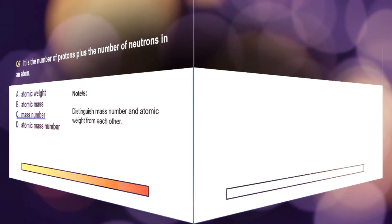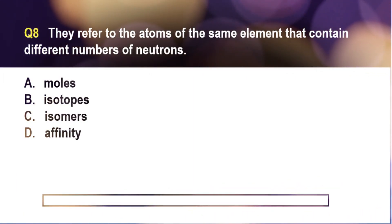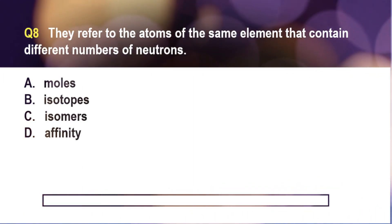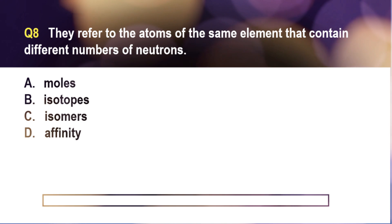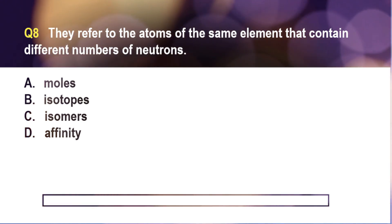Question number eight. They refer to the atoms of the same element that contain different number of neutrons. A. Moles, B. Isotopes, C. Isomers, D. Affinity.